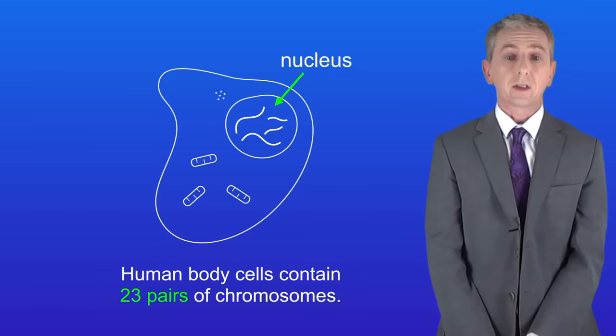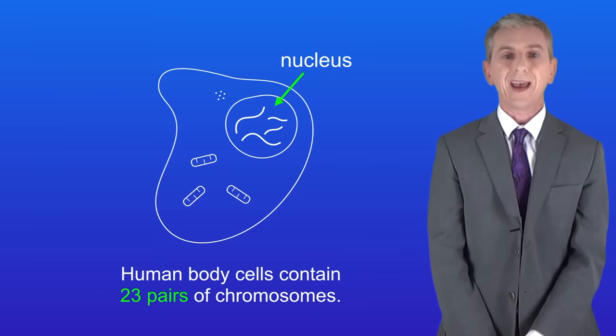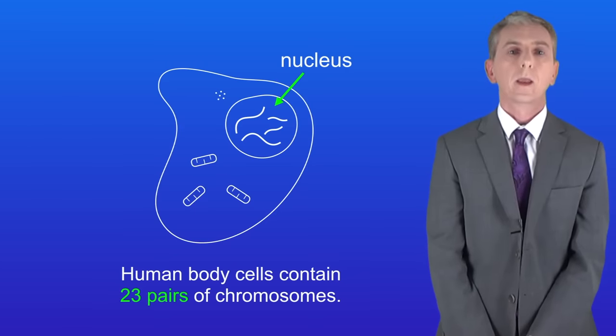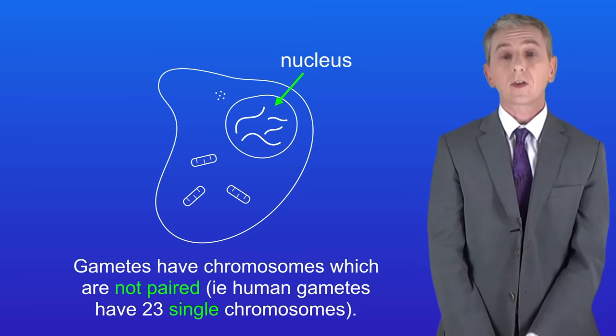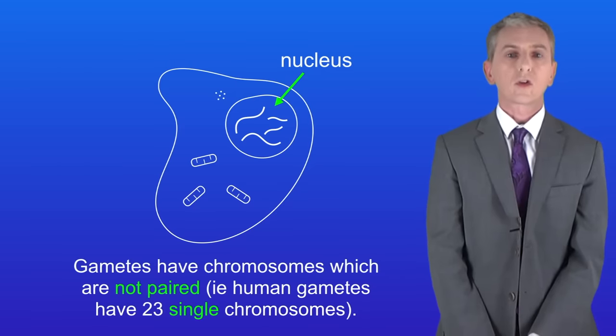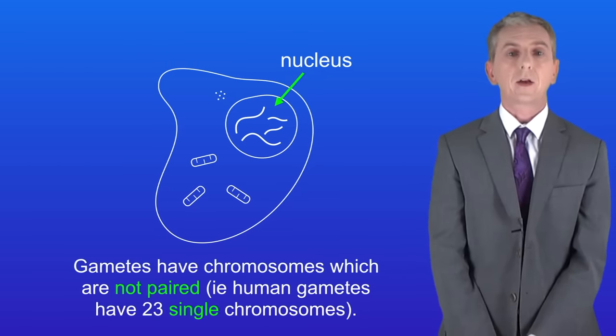Human body cells contain 23 pairs of chromosomes. I should point out that certain cells called gametes have chromosomes which are not paired, and we're going to look at that in a later video.